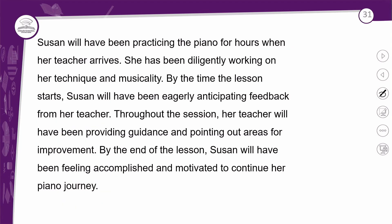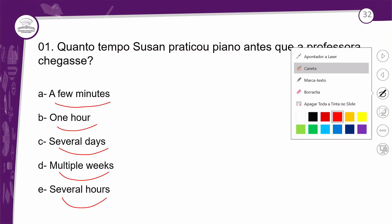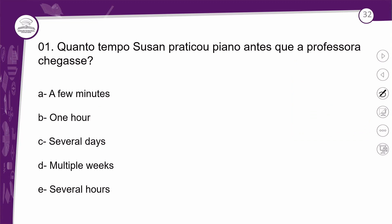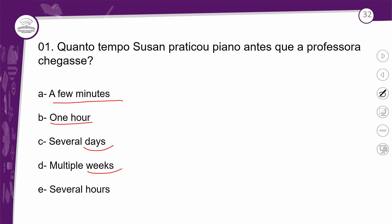Vamos lá! Susan will have been practicing the piano for hours when her teacher arrives. Já temos uma resposta bem no início. Ele fala 'for hours', por horas. Aqui na alternativa, você não tem 'for hours' exatamente, mas você tem 'several hours', que é a letra E — muitas horas. Sinônimo de por horas é muitas horas. Não foram dias, não foram semanas, não foi uma hora e nem alguns minutinhos. Então, já temos a resposta da number one.